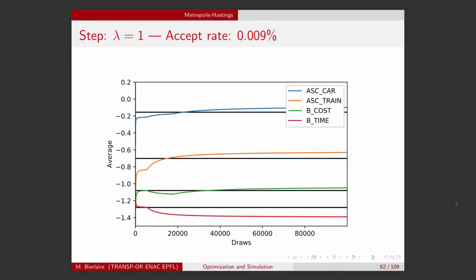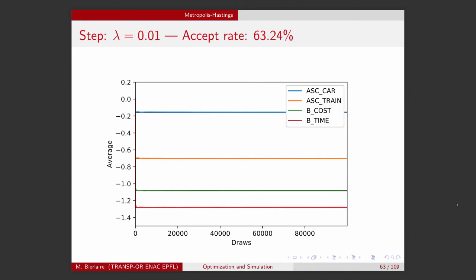If I increase the value of lambda, we have again a very small accept rate and a long time to converge to the real distribution. But now if we have a low value of lambda, we have a high accept rate,